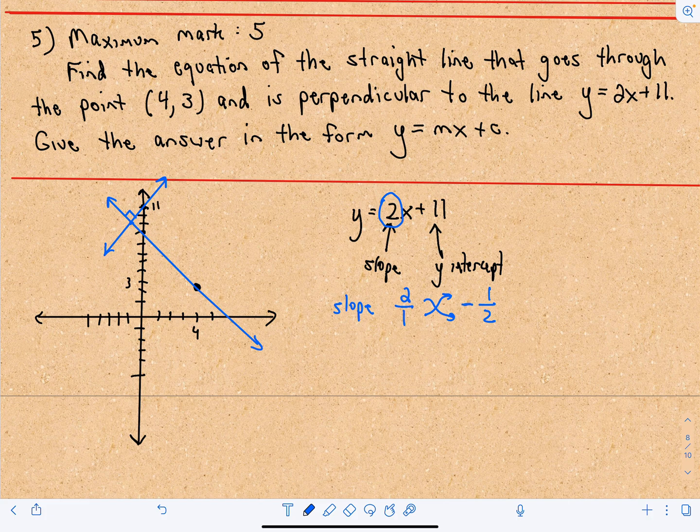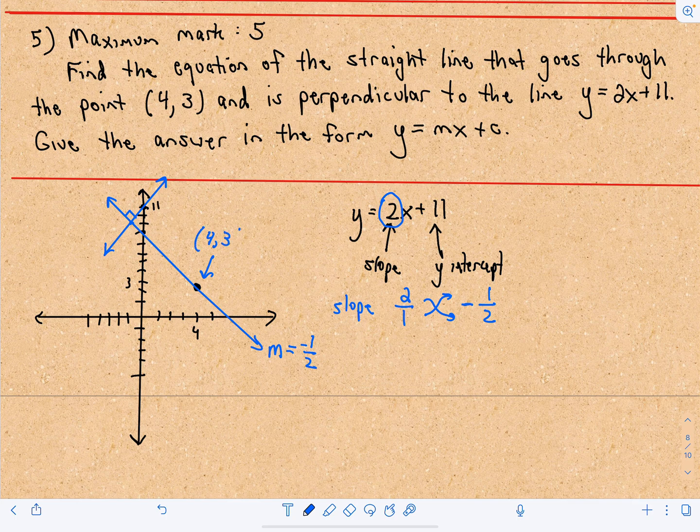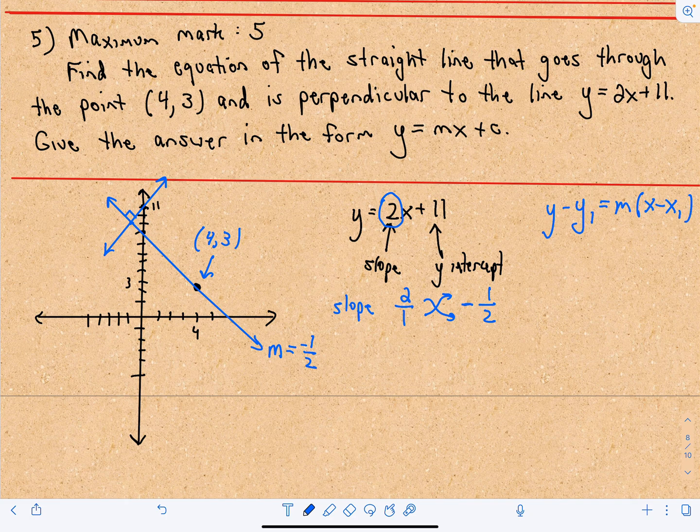I'm going to use a negative 1 half. So I know the slope of this new line is going to equal negative 1 half. And we've got a point that the line goes through, 4 comma 3. So now we can use point-slope form. So recall that that's y minus y sub 1 equals m times x minus x sub 1. And that's if it goes through the point x1 comma y1 with a slope of m.